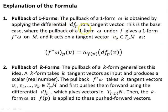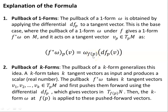Explanation of the formula — pullback of one-forms. The pullback of a one-form omega is obtained by applying the differential df_P to a tangent vector. In previous videos I tended to use capital D subscript P, then F, but this lowercase d notation is more suggestive of a differential. This is the base case where the pullback of a one-form omega under F gives a one-form F asterisk omega on M, and it acts on a tangent vector V subscript P belonging to the tangent space of manifold M at P. F upper asterisk omega at P acting on V is the same as omega F at P — the one-form at the target manifold N — acting on the push-forward vector. These two things are equal, and that's the important thing about the pullback.